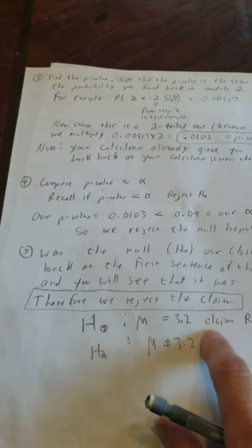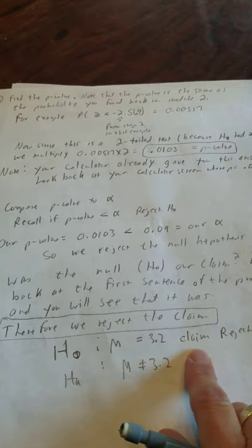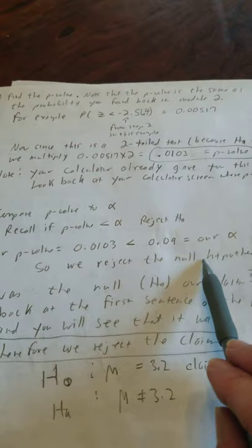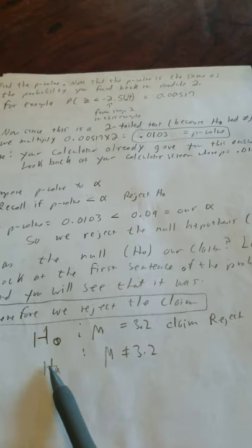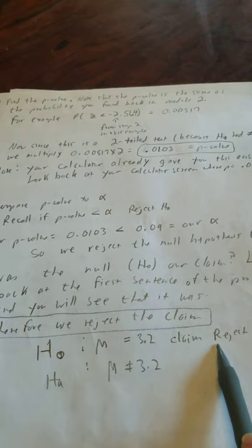So again, you really always want to have this written down together: the null hypothesis, the alternative, which one was the claim. In this particular problem the claim was the null hypothesis because the first sentence said they claim that the mean consumption was equal to 3.2. Equal always goes with the null. They told us that was our claim. And in this last step we just determined we reject the null hypothesis right there. We reject the null hypothesis because our p-value was less than alpha. So I go back and I write that down. So you always have at the very end, always look back where was your claim and did you reject the null or fail to reject. That will tell you your final decision, which in this problem is we reject the claim.